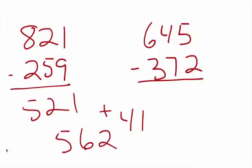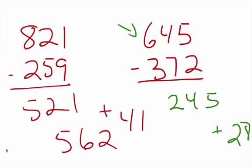Now let's look at this question. 645 minus 372. So of course we're going to bring 372 up to 400. And how far do we have to go up to get to 400? 28. So 645 minus 400 is 245. 245 plus 28 will give us 273.